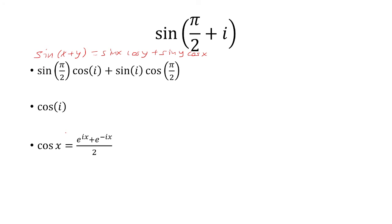Now we can simplify cosine of i because we know that cosine of x is equal to e to the ix plus e to the negative ix, all over 2.